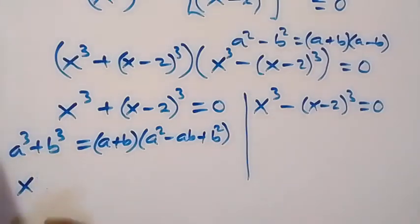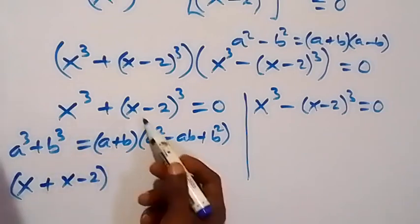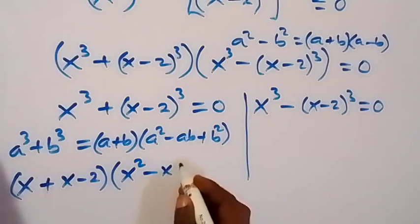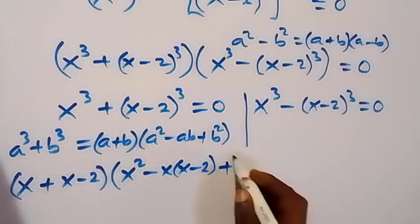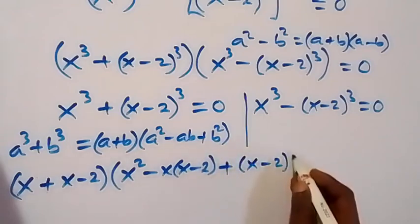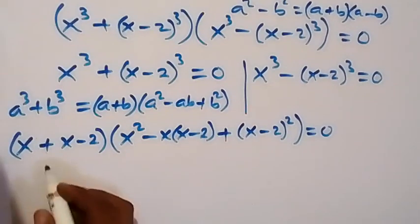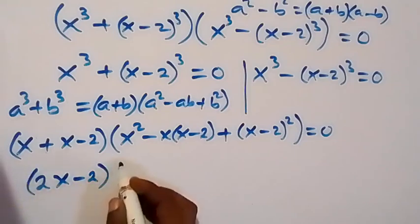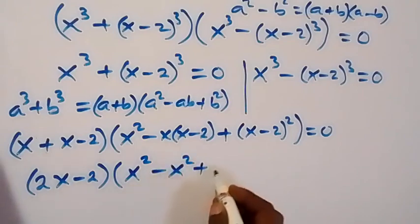Here, a stands as x and b stands as (x minus 2). So in the form (a plus b), that is x plus (x minus 2), multiplied by the bracket: x squared minus x times (x minus 2), plus (x minus 2) squared.